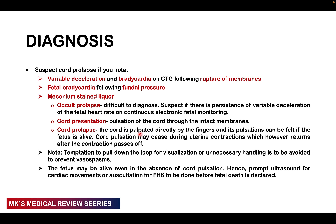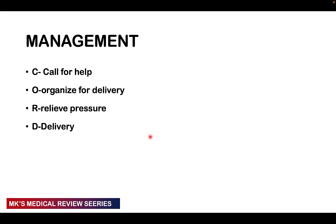With cord prolapse, you can actually palpate the cord with your fingers and feel its pulsations if the fetus is alive. Remember that cord pulsations may cease during uterine contractions but return after the contraction stops. There is temptation to pull down the loop to visualize and confirm the cord — do not do this. Any unnecessary handling of the cord should be avoided as it may cause vasospasm, predisposing the child to hypoxia. If the fetus is alive, even in the absence of cord pulsations, perform a prompt ultrasound for fetal cardiac movements or auscultate the fetal heart before declaring fetal death.